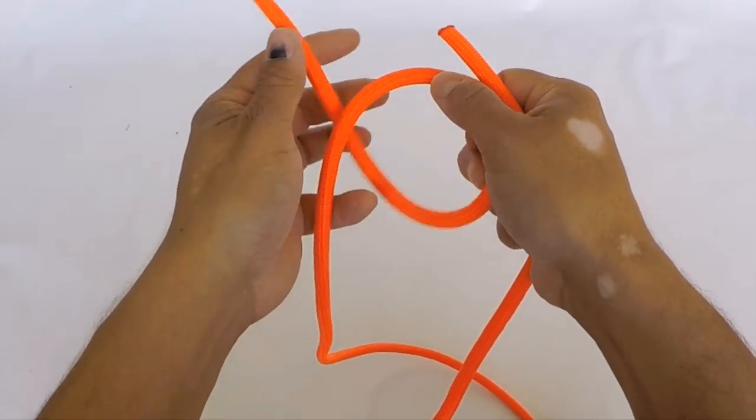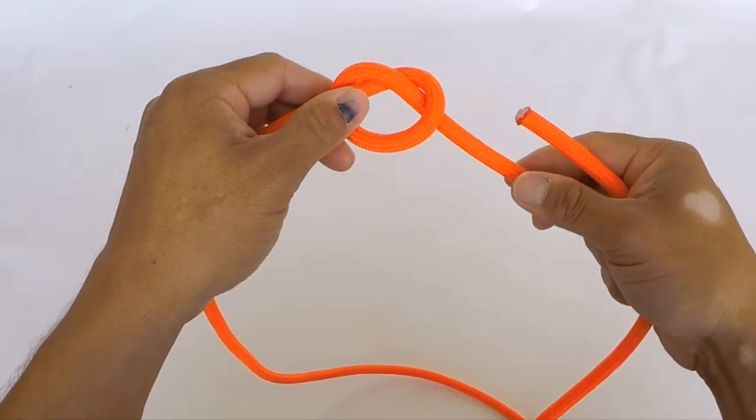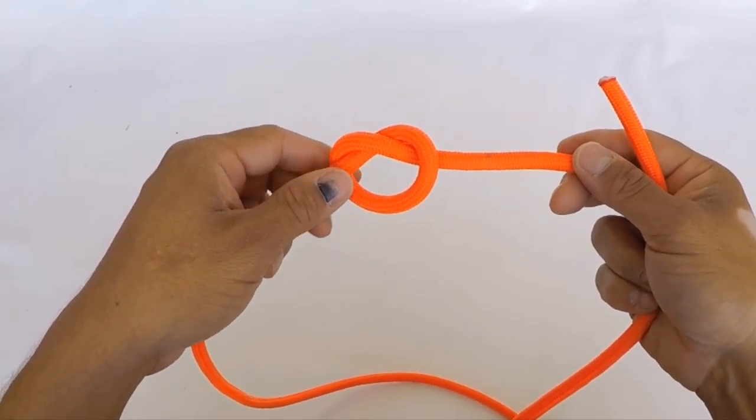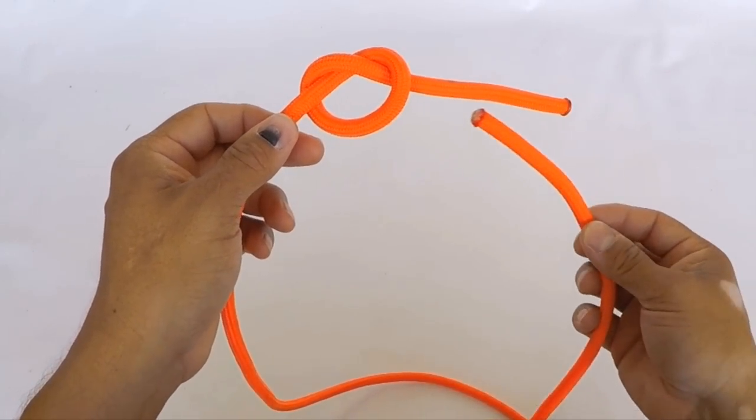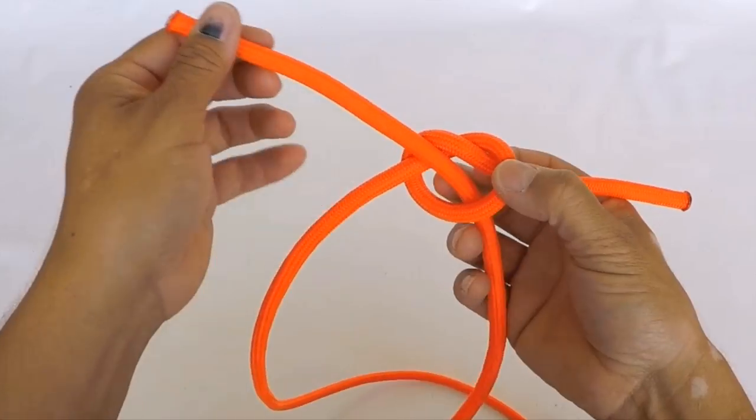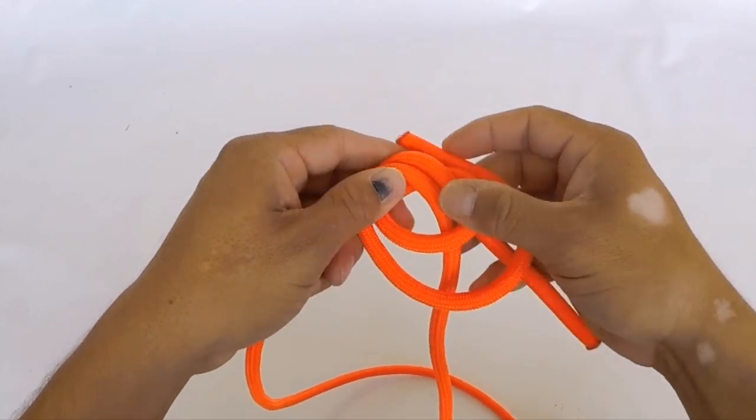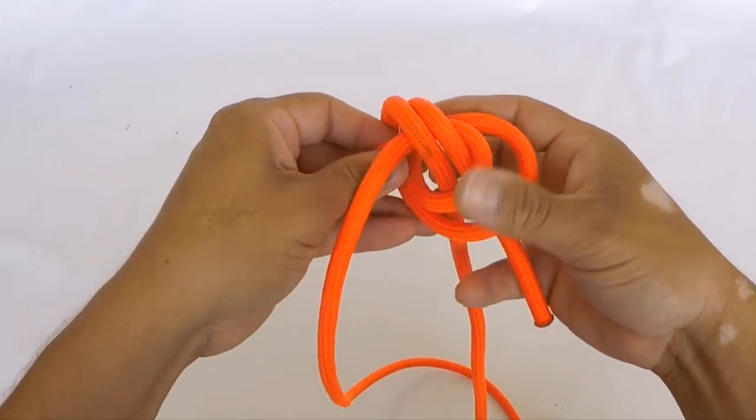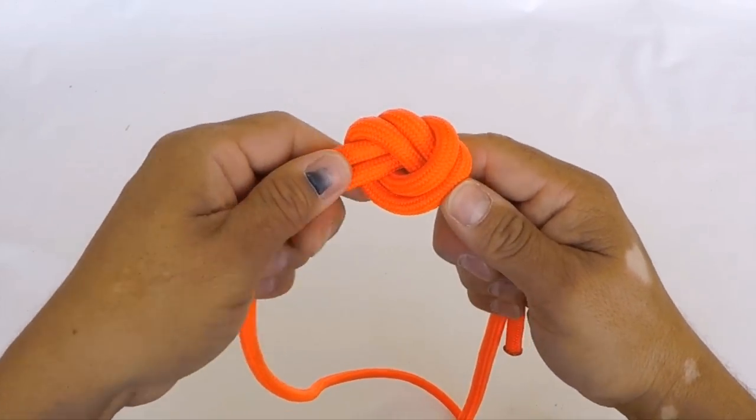I find myself using the water knot whenever my children are making bracelets or necklaces. You only want to use this with cordage that'll break when it gets caught onto something. Start off with an overhand knot on one side, and then the other side you just simply trace it. Poke it through, run it around, and we're just tracing the other knot itself. Then we just pull everything tight. This works great when you're doing those beading projects.